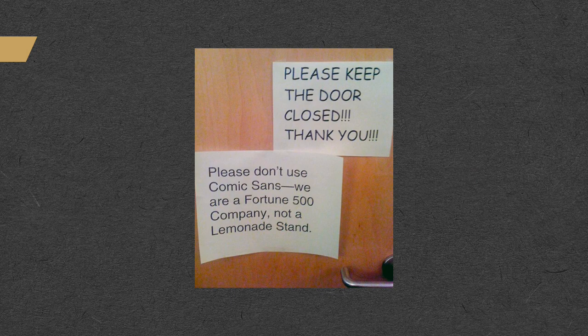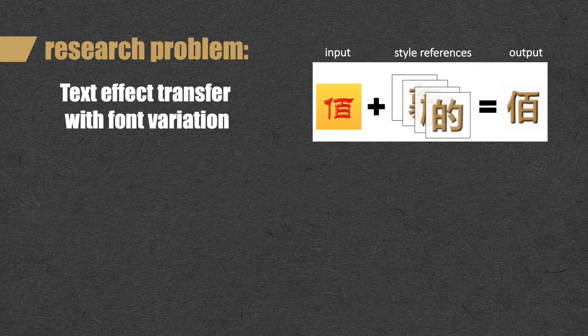In real design scenarios such as poster design, the goal of text effect transfer is not only to keep colors, shadows, and textures the same as the input — they also need to use the same font as the input to make the style or feeling harmonious. So this is our research problem: text effect transfer with font variation. The transfer not only covers varied features such as colors, shadows, and textures, but also includes font changes.